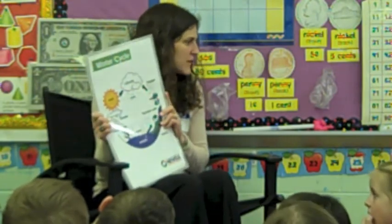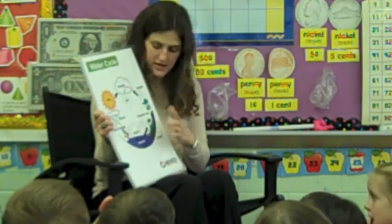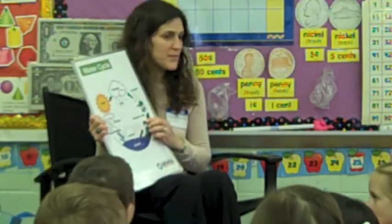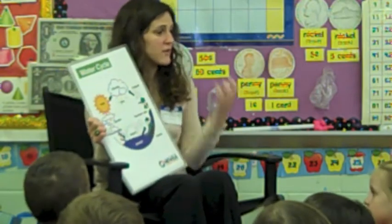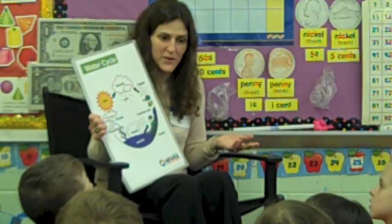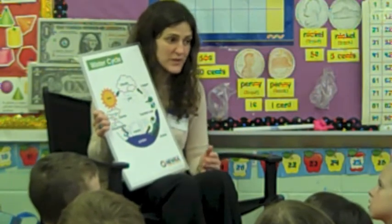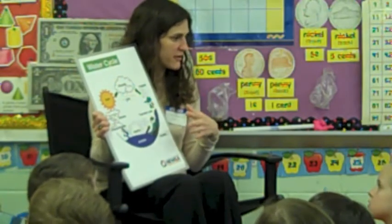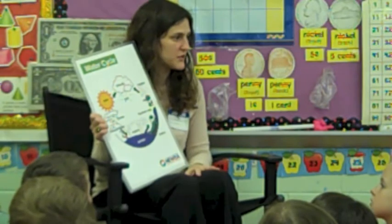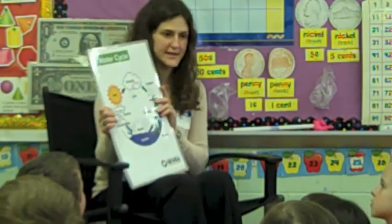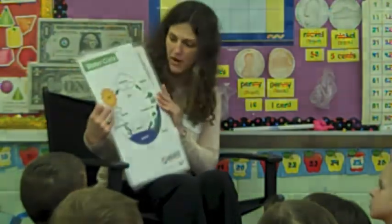But one thing we haven't talked about in this whole water cycle is people. People are part of the water cycle too, because we take water out of the environment and we use it, and then we put it back into the environment. It's really important that the water is clean when we use it for all the things we use it for in our houses, and then it's important that it gets cleaned again before it gets returned to the environment so that it's healthy for people and for all the animals that use water.